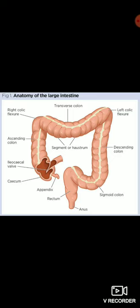The next part of the large intestine is called the colon. It is an inverted U-shaped tube divided into four parts: ascending colon, transverse colon, descending colon, and sigmoid colon. The colon has three muscular longitudinal bands called the taeniae coli, and small pouches called haustra.